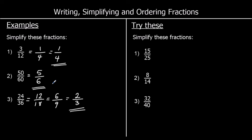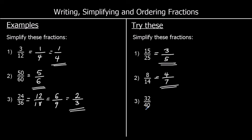Question one is 15 out of 25. We can say they're both in the five times table, so 15 is three fives and 25 is five fives — so it's three fifths. Eight and 14 are both in the two times table, so eight is four twos and 14 is seven twos — so it's four sevenths. And 32 out of 40 — the biggest times table they're both in is the eight times table. So 32 is four eights and 40 is five eights — so it's four fifths.